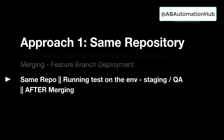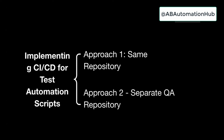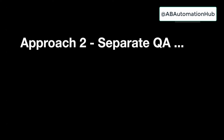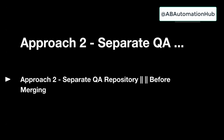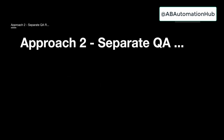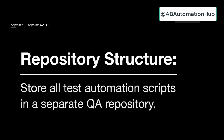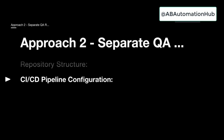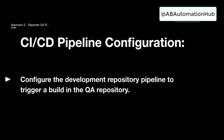Now comes our second approach: your test scripts are located inside a different repository, which is a QA repository. In this approach also, we will see different sub-approaches. The first sub-approach is a separate QA repository before merging the code. Your repository structure would be such that all test automation scripts are in a separate QA repository and your dev code is in a separate repository. You configure the dev repository pipeline to trigger a build in the QA repository.